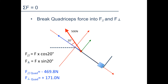Now we will take a look at the quadriceps force. The force is 500 newtons in magnitude, pulling on the tibia at a 20 degree angle. We can calculate the parallel component of the quadriceps force by multiplying 500 newtons by cosine of 20 degrees, and the perpendicular component by multiplying 500 newtons by sine of 20 degrees. The component of the quadriceps parallel to the leg is negative 469.8 newtons, and the perpendicular component is 171 newtons. The negative value indicates the force is pointing towards the knee, and the positive perpendicular component indicates the force is pointing anteriorly.